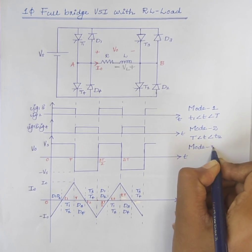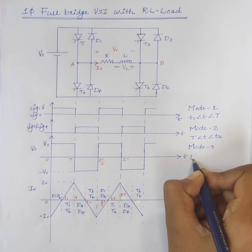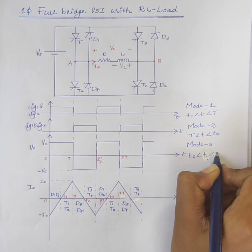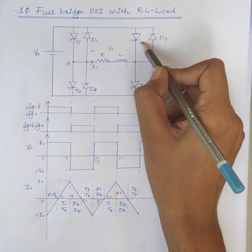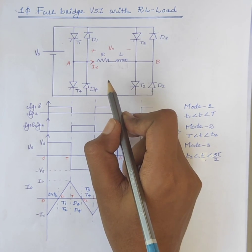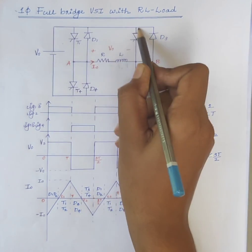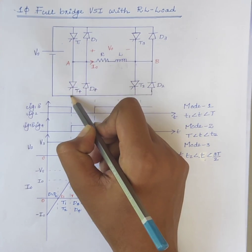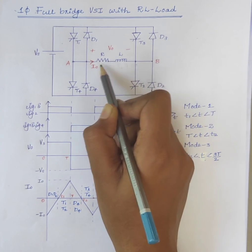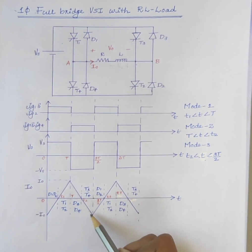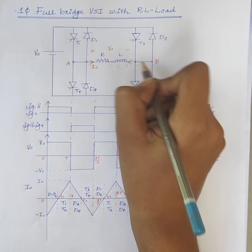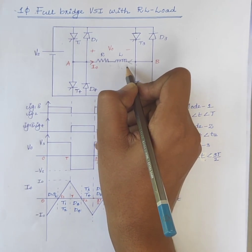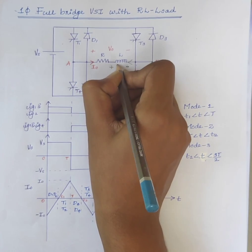Next is Mode 3, for the interval T2 less than T less than 3T by 2. Here at instant T2, the switches T3 and T4 are turned on and current flows through the path: Vs, T3, load, T4, back to the source. We can see that current flows from B to A. Therefore the current increases exponentially in the negative direction and the load again stores energy. Here current direction is from B to A, therefore the polarity of induced voltage VL is negative at one end and positive at the other.